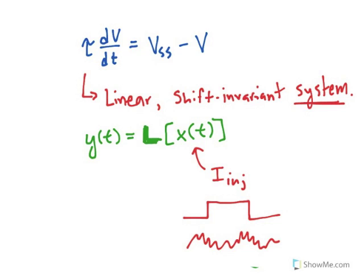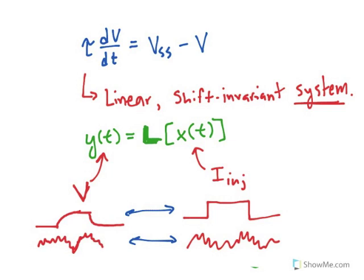When we do that, we will get out some voltage trace over time. So in the case of a step current, the voltage trace would look something like this. It exponentially approaches its steady state, and then when the current step comes off, it goes down. And if you inject a noisy current, then you'll get some sort of a noisy voltage trace out.